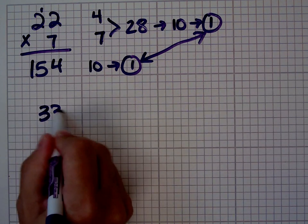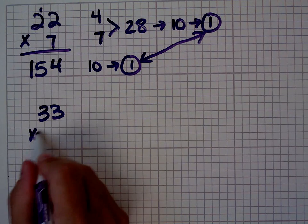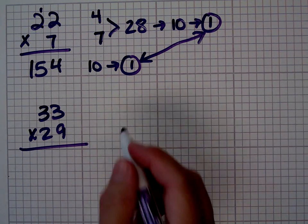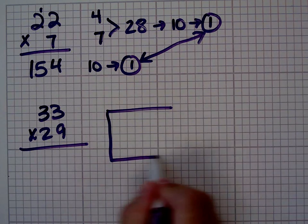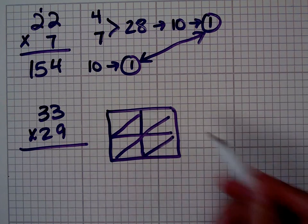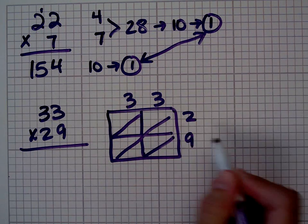Let's try another one. 33 times 29, and you can use whatever method you want to multiply it. I prefer to use matrix multiplication. There is another Markerboard video about matrix multiplication if you're not sure how to do it.